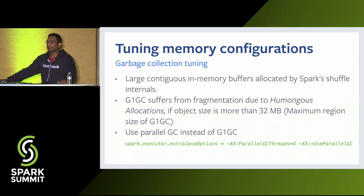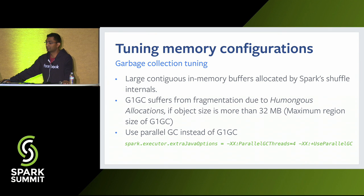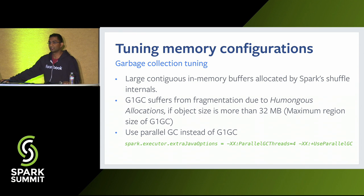The third configuration for memory management is tuning garbage collection. Shuffle internals allocate large contiguous in-memory buffers, and this frequent allocation of large contiguous buffers does not play well with some garbage collectors like G1GC. We found that G1GC suffers from fragmentation when object size exceeds the region size of 32 MB. You can switch to parallel GC instead of G1GC to avoid OOM due to memory fragmentation.